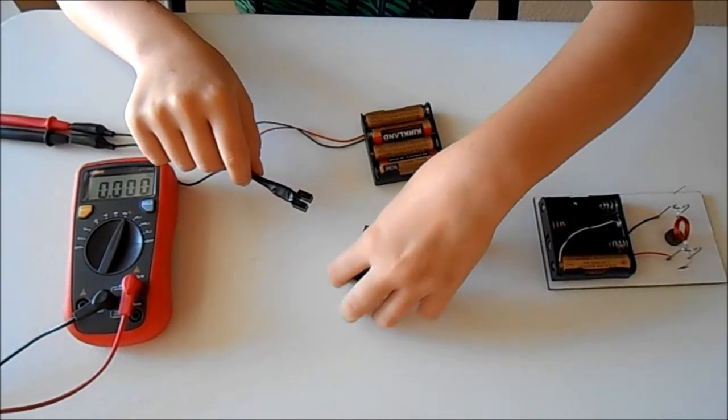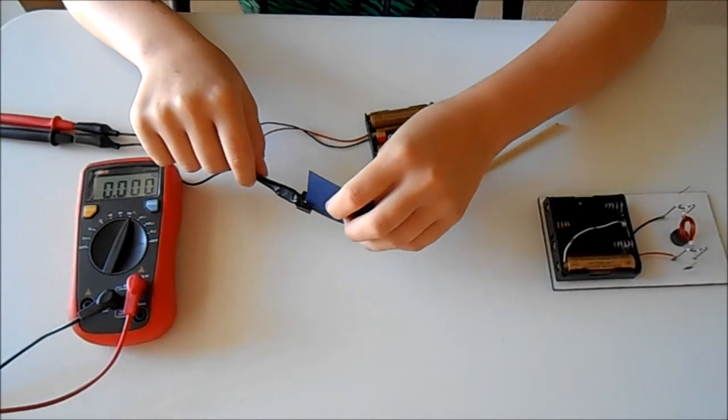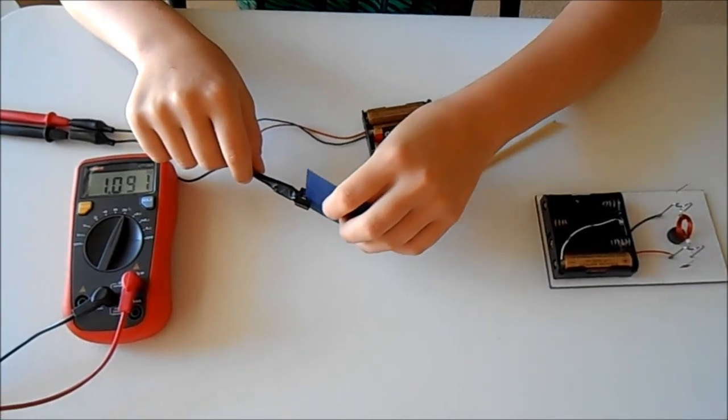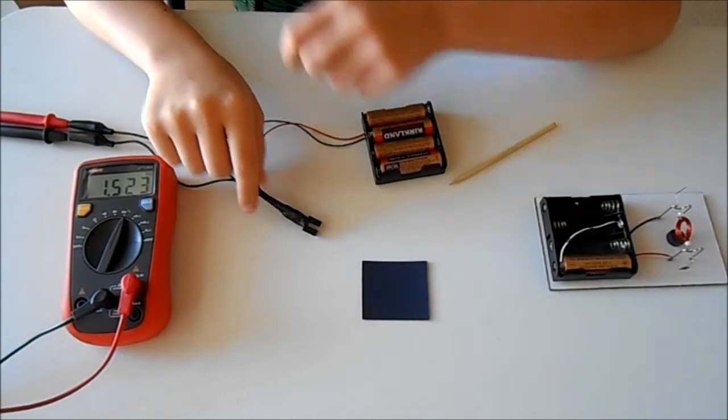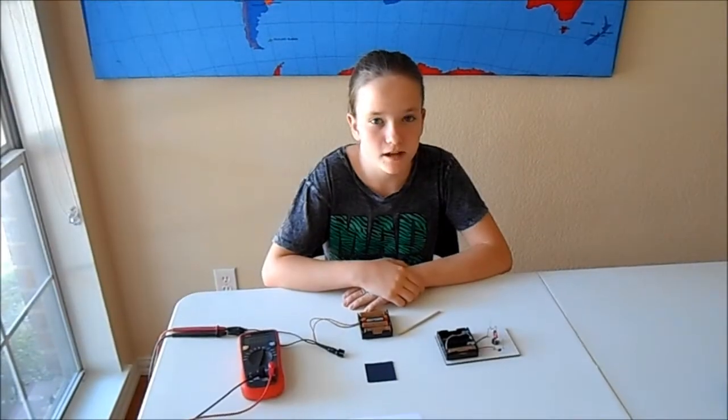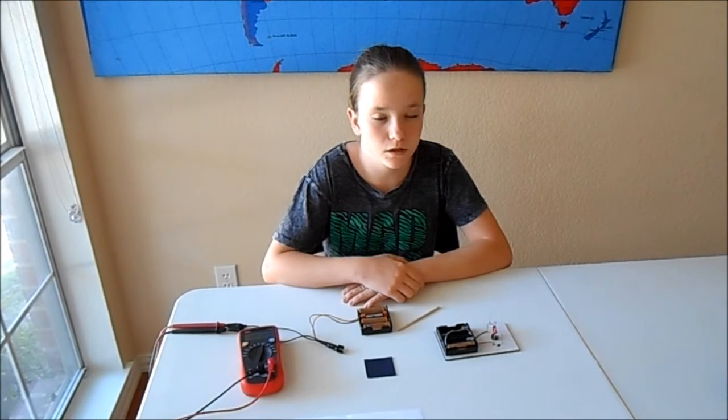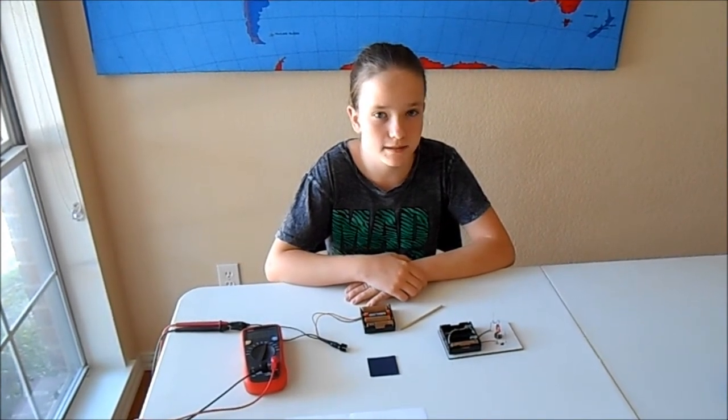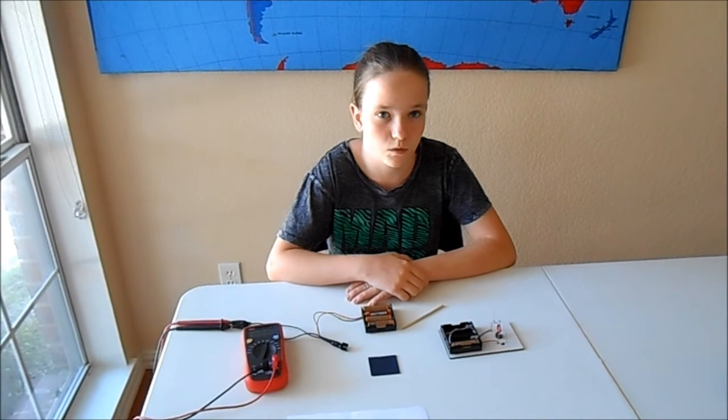Every time a non-transparent object passes through the slot it sends a signal to the multimeter which displays how many times in one second it happened. To get RPM or revolutions per minute we need to multiply the reading in hertz by 60 as there are 60 seconds in one minute.